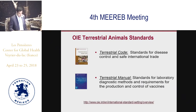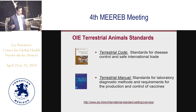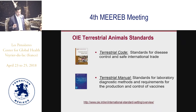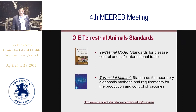When it comes to terrestrial animals, there are two different sets of international standards. The Terrestrial Code, which sets standards for disease control and safe international trade, and the Terrestrial Manual, which sets standards for laboratory diagnostic methods and also the requirements for the production and control of vaccines.